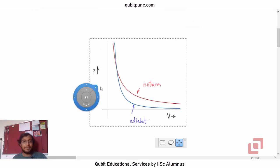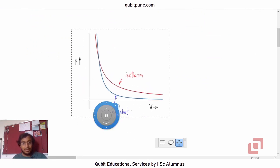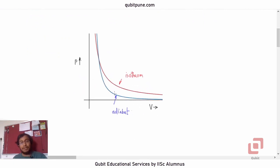So, this is the figure that I have drawn. The red curve represents the isotherm and the blue curve represents the adiabate. And suppose they intersect at this particular point. Now, why can they never again intersect each other?